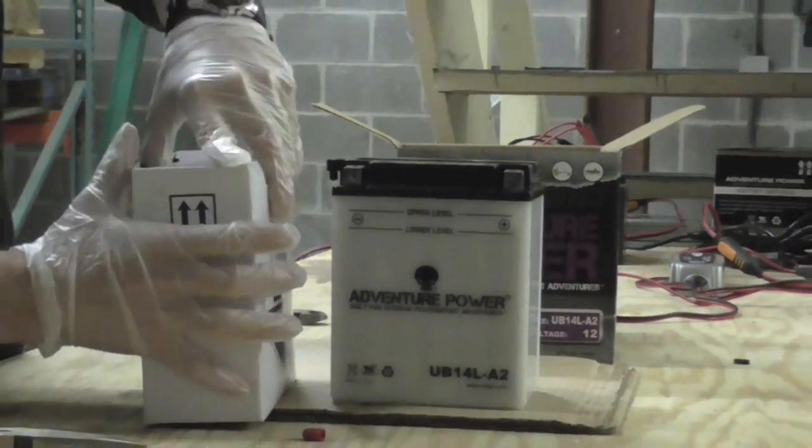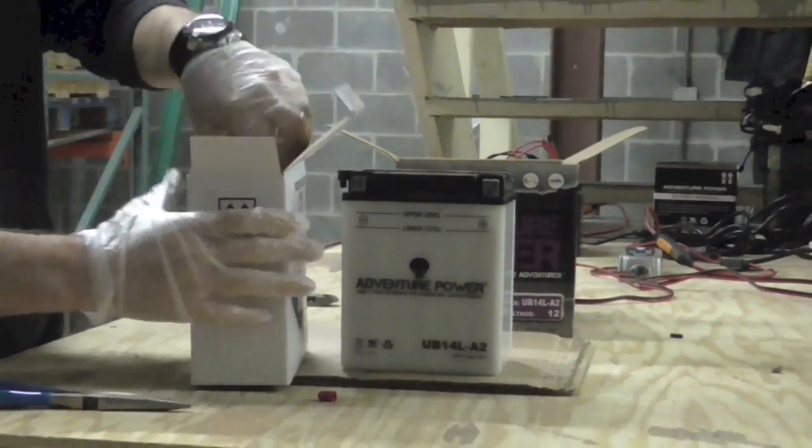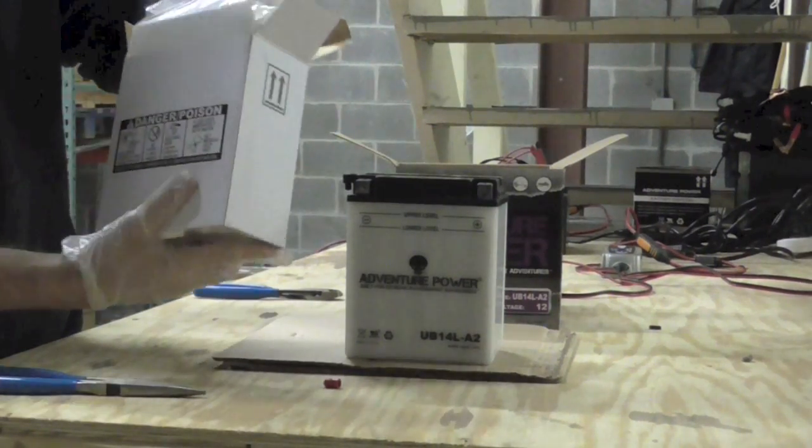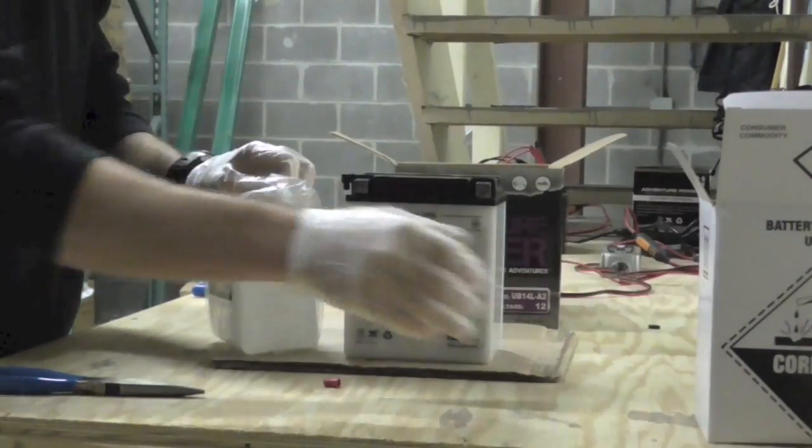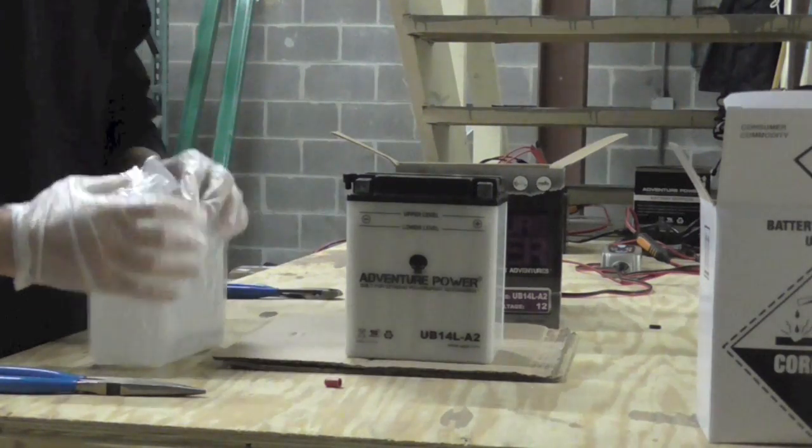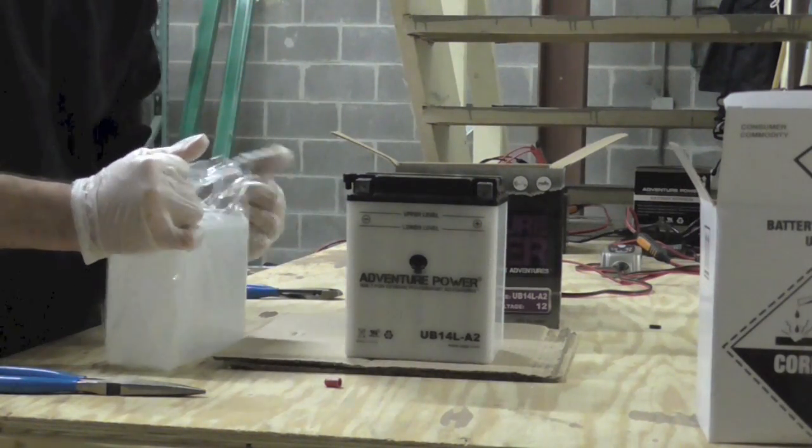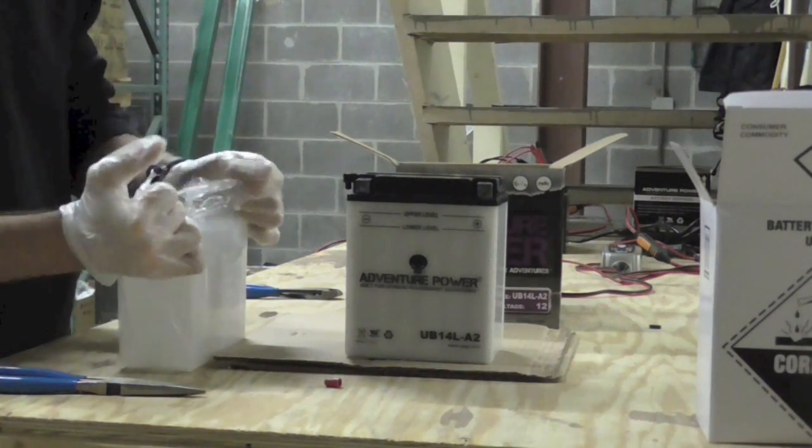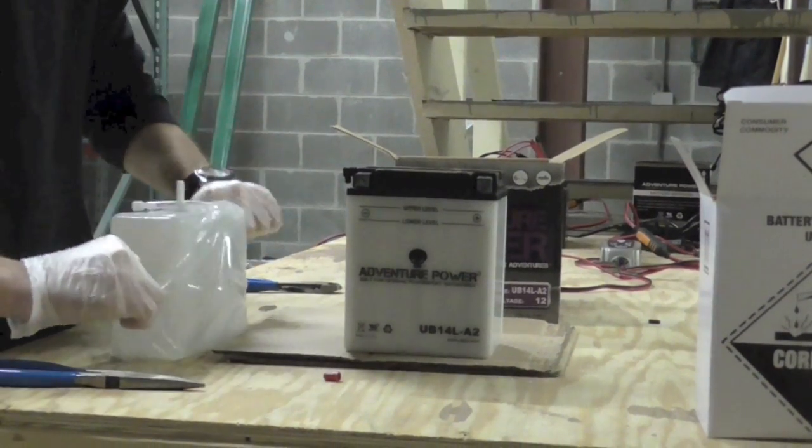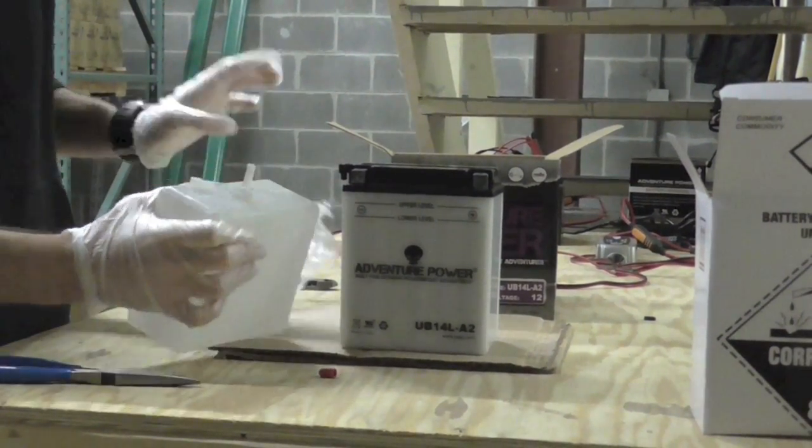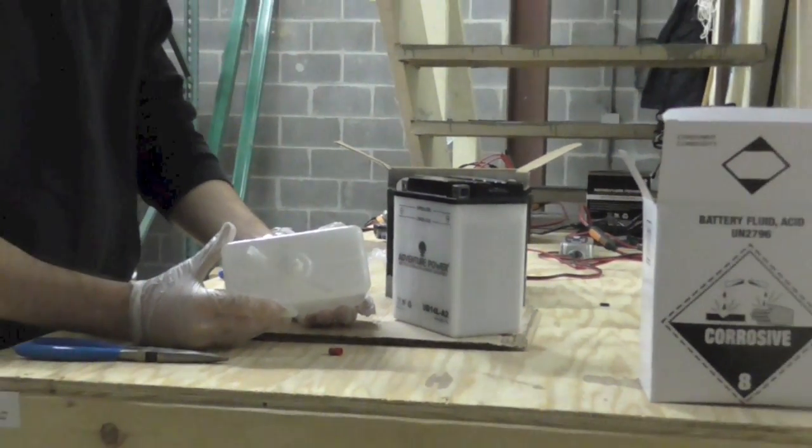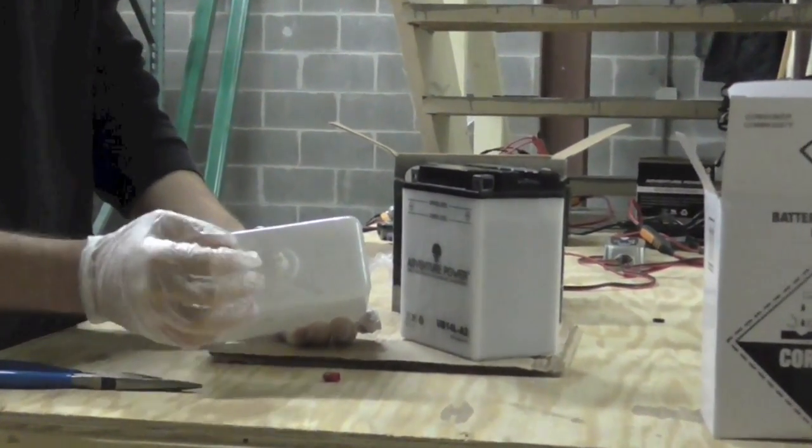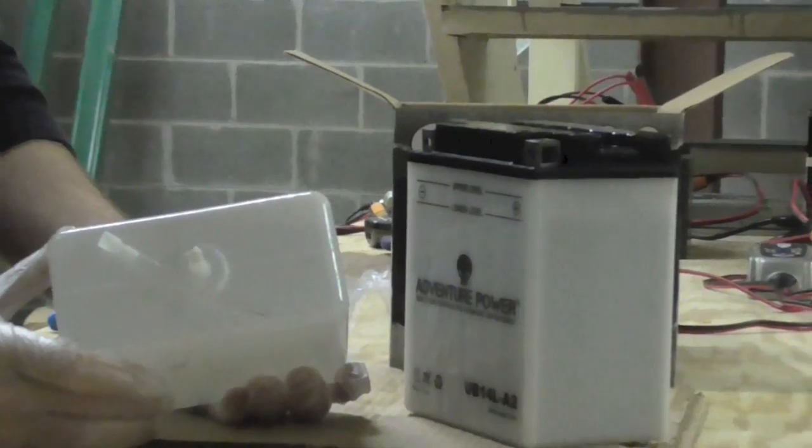Now, we're going to be taking out the actual acid. Once you remove the acid from the plastic wrap here, you're going to see that it's melted off at the end so it can't come out. That's the part we're going to cut off, just the very top of it, so the acid can flow freely.